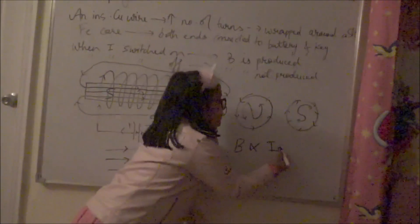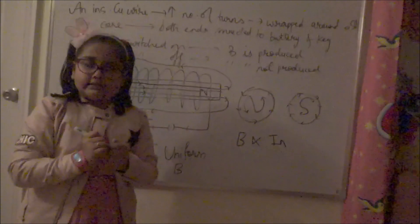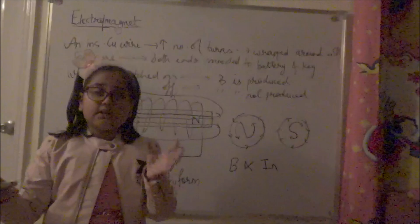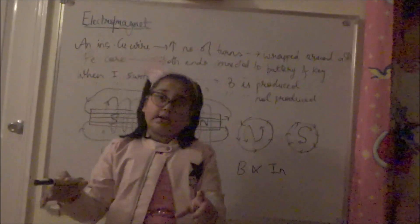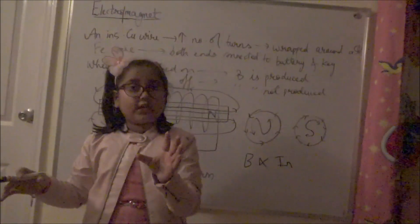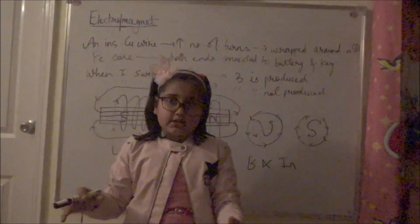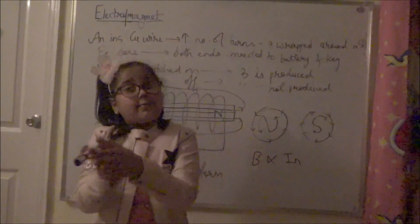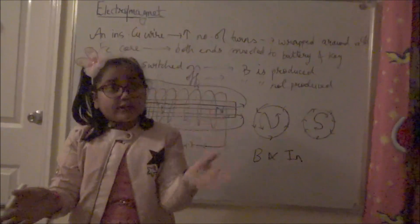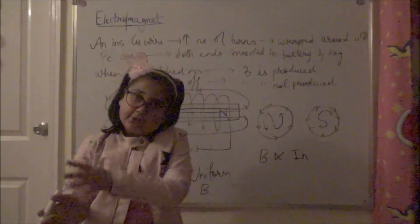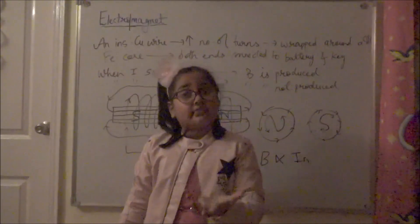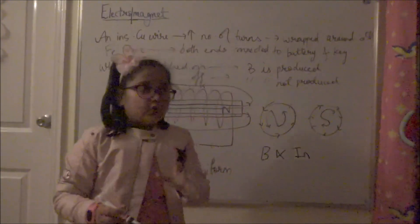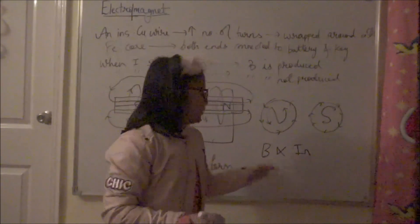The second factor is the number of turns per unit length, represented by n. The more the number of turns, the more magnetic field is produced, because each turn carrying current produces its own magnetic field, and the fields from all turns add up. So the overall magnetic field is the sum of contributions from each turn.